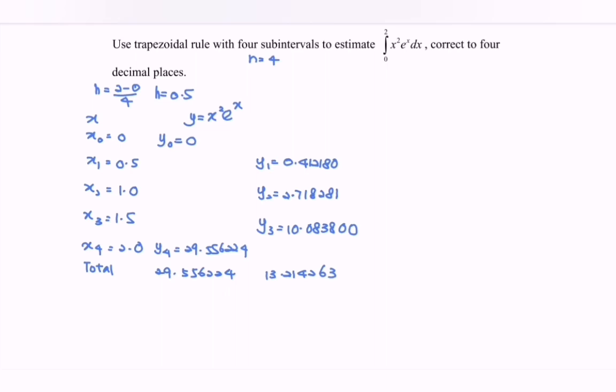Next, substitute into the formula, h over 2, bracket, we have y naught plus y sub 4, and plus 2 multiply, we have y sub 1, plus y sub 2, plus y sub 3.